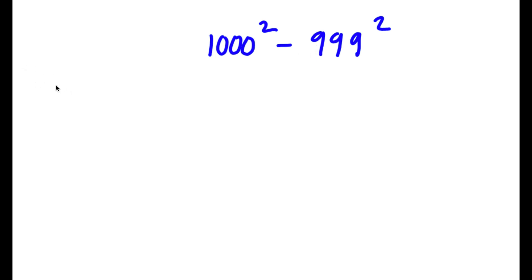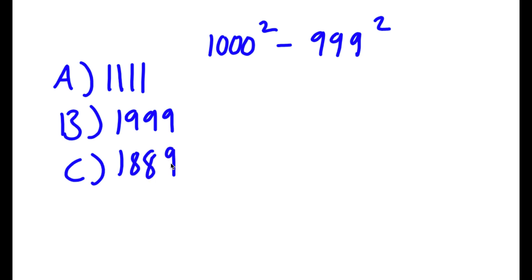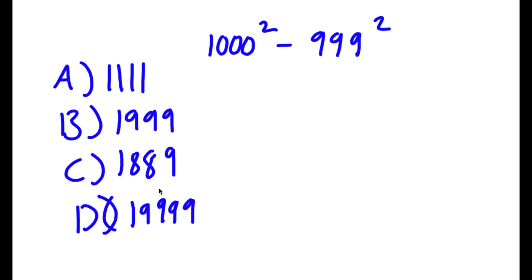For our answer choices: A is 1,111; B is 1,999; C is 1,889; and D is 19,999. We need to figure out which of these answer choices is correct.